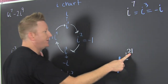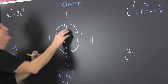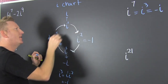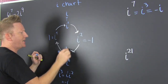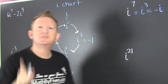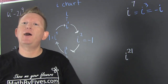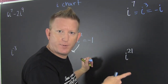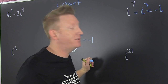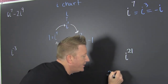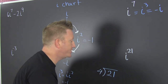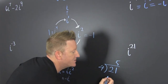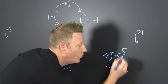That's i to the 21. Fun — but what? That's one, two, three, four, five, six, seven, eight, nine, ten, eleven, twelve, thirteen, fourteen, fifteen, sixteen, seventeen, eighteen, nineteen, twenty, twenty-one. So when you have large powers of i, every four it cycles around. So what you want to do is take that 21 and divide it by four. Four goes into 20 five times — that's 20, and the remainder is one.